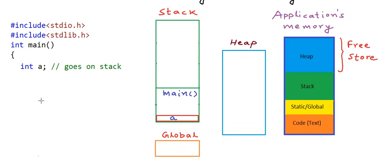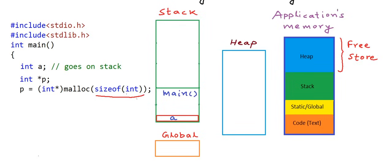To reserve or get some space allocated on the heap, we need to call the malloc function. The malloc function asks for how much memory to allocate on the heap in bytes. When we say malloc and pass as argument size of integer, we are saying give me a block of memory which is four bytes. Four bytes is the typical size of an integer. So one block of four bytes will be reserved on the heap, and malloc will return a pointer to the starting address of this block. Malloc returns a void pointer.